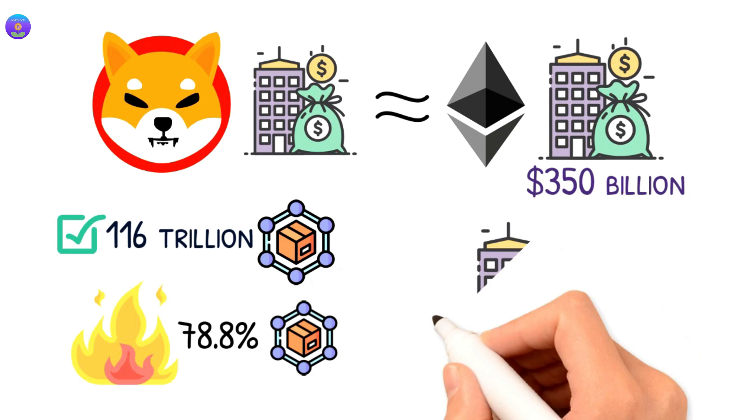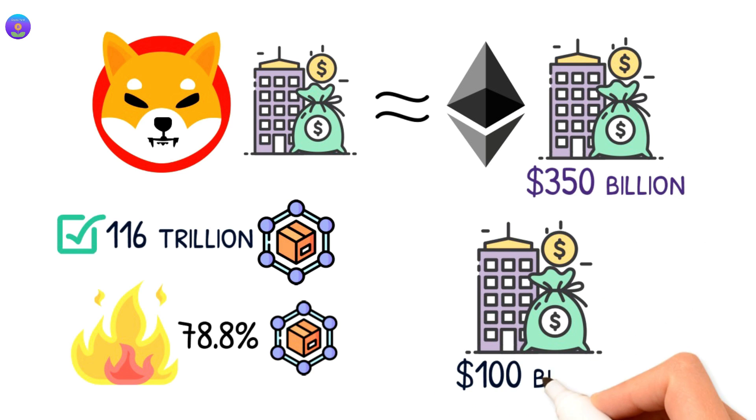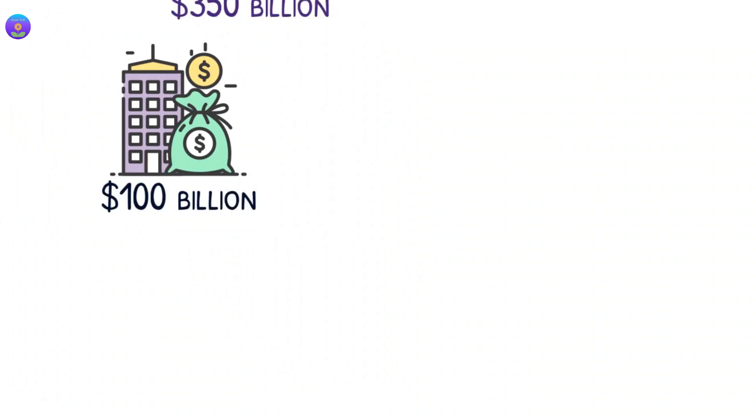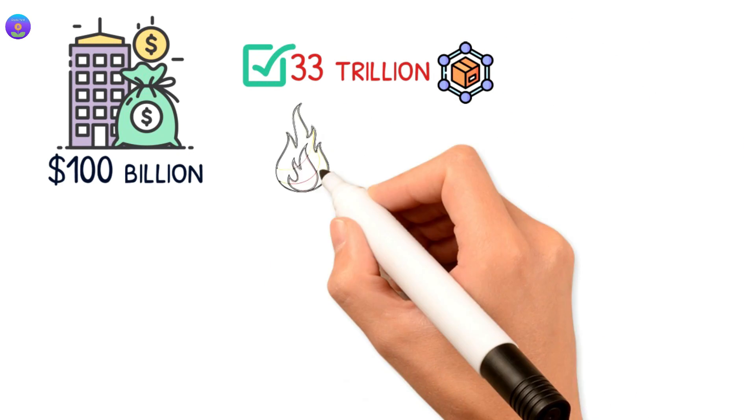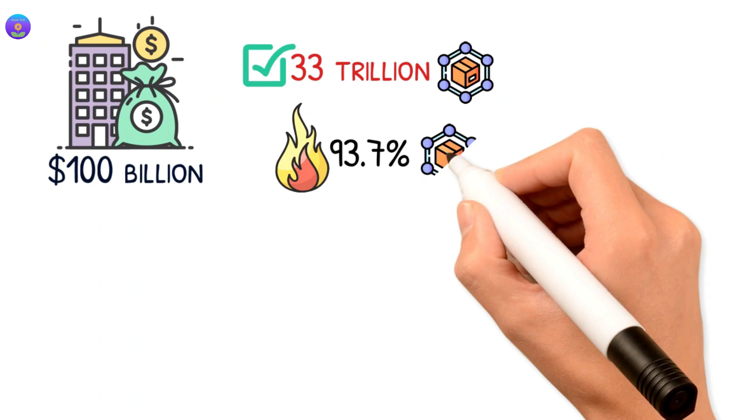If we go for a moderate market cap which is around 100 billion, then we need around 33 trillion in the circulating supply. This means we need to burn 93.7% of the circulating supply.